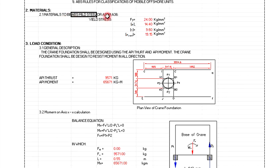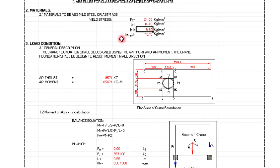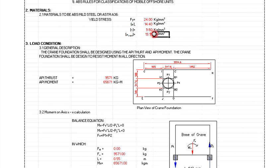The material to be used is mild steel or STM 86. The yield stress is 24 kg/mm², the allowable bending stress is 14.4 kg/mm², the allowable shear stress is 9.60 kg/mm², and the equivalent stress is 19.5 kg/mm².